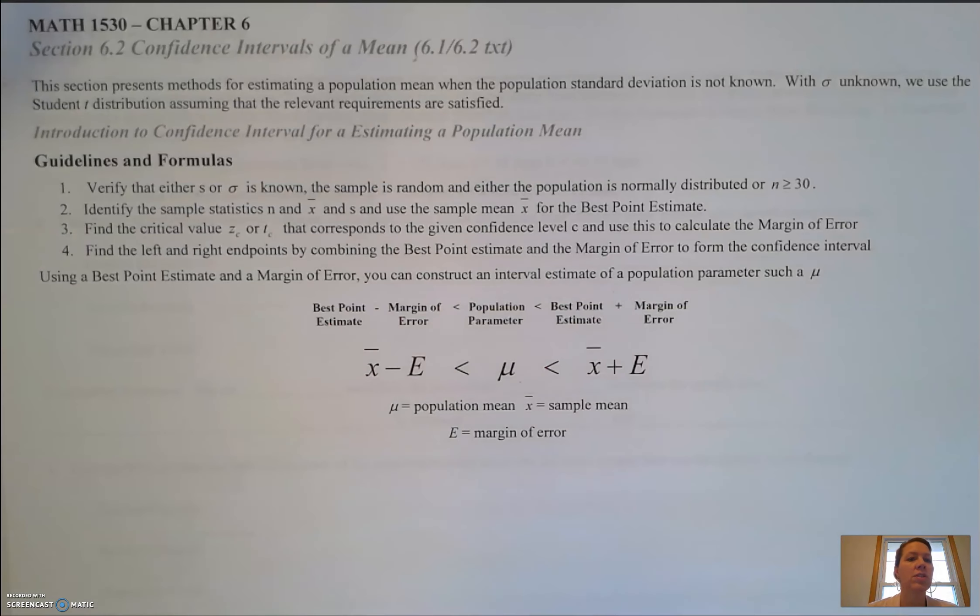Welcome to section 6-2, confidence intervals for a mean. In this section you're going to be presented with ideas about finding a confidence interval for a population mean. For example, if we took the sample mean of ages in a classroom of college students, we could use that sample mean to predict a range or interval for the population mean of all of the students at the college.